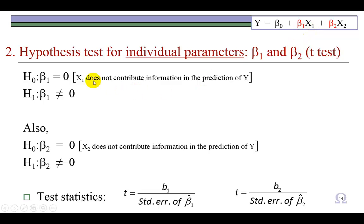Accordingly, the null hypothesis for X₁ is as shown: β₁ is equal to 0, because if β₁ is 0, then X₁ has no impact on Y. And the alternative hypothesis is that β₁ is not equal to 0.